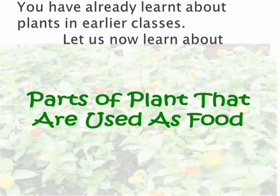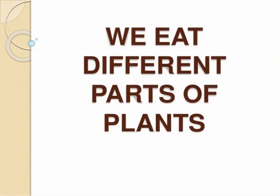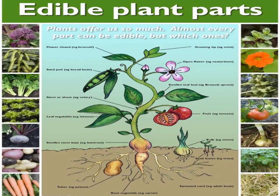Let us now learn about parts of plants that are used as food. We eat different parts of plants. Almost every part of a plant can be eaten, such as leaves, bud, flowers, fruits, roots etc., as you can see in the picture. Now you must be thinking how — let us move ahead in the chapter and you will see how.